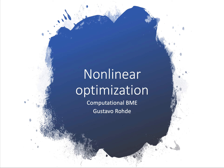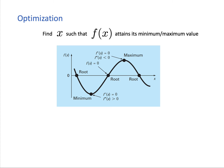Welcome back. In this video we're going to talk about nonlinear optimization. Optimization refers to finding the minimum or maximum of a function — it applies to both minimization and maximization problems. For example, given a function f of x, we want to find the value of x such that f of x attains its minimum or maximum value.